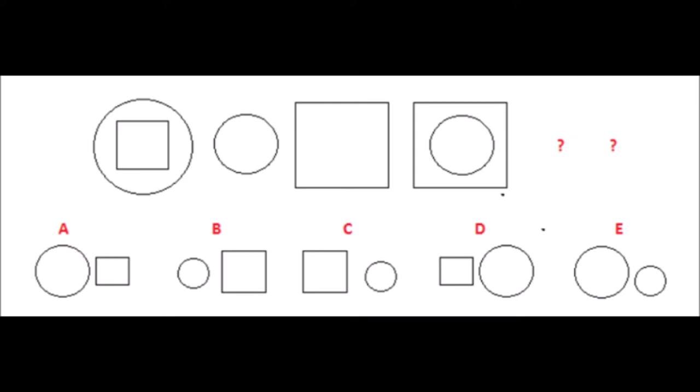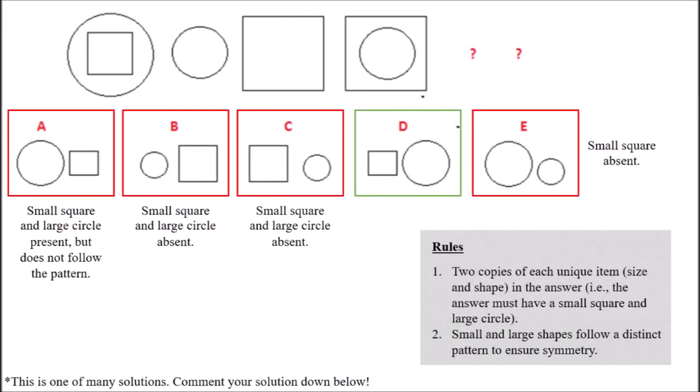The answer to the first question is option D. This is because of the fact that there are two observable rules within the question that must be followed. The first rule is that there must be two copies of each unique shape. As such, the answer to this problem must contain a small square and a large circle. This rule eliminates options B, C, and E from our list of potential answers.